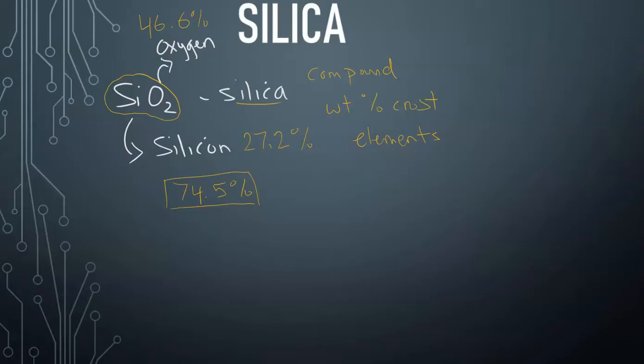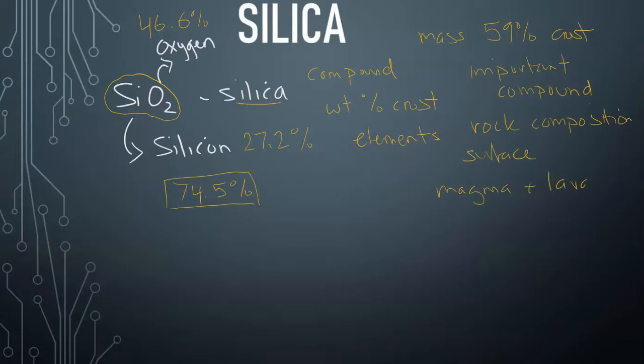Now in terms of the mass, silica makes up 59% of the crust. So it is a very important compound to consider when looking at the rock composition so close to the surface whereby you have the magma and the lava being derived from the rock, melting in different processes to form the molten component, which contains this abundant silica within it.